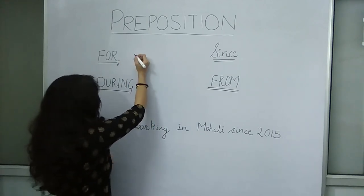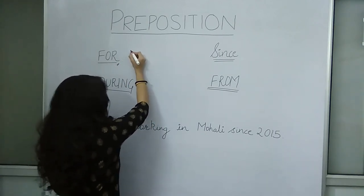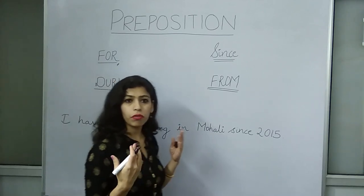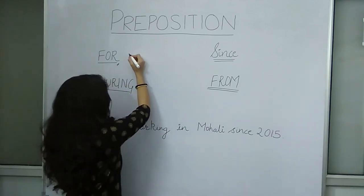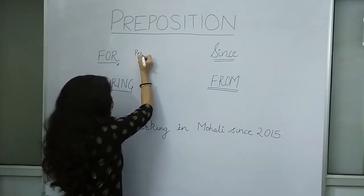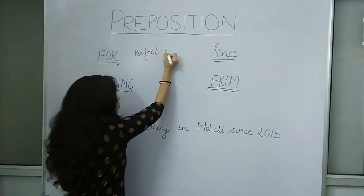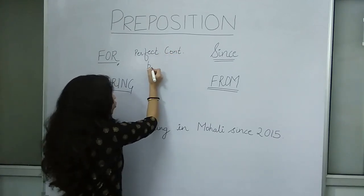So basically, we use 'for' with present perfect continuous, past perfect continuous, or future perfect continuous — along with some basic sentences as well. So for perfect continuous use, we use it with perfect continuous, but with some basic sentences, we also use it with our basic sentences.